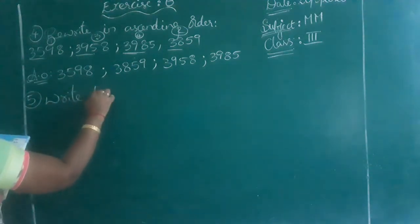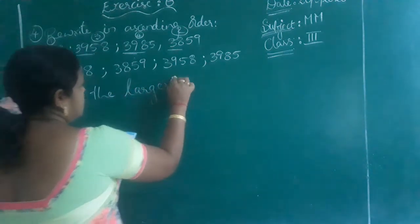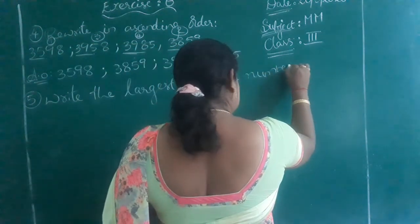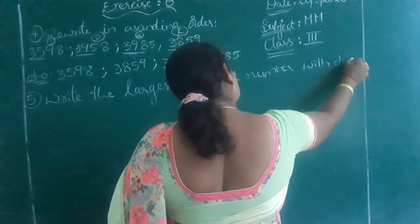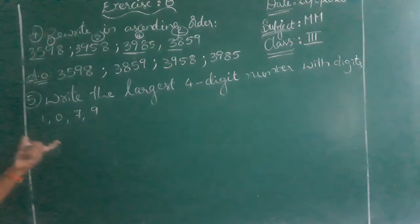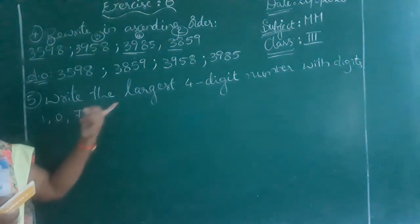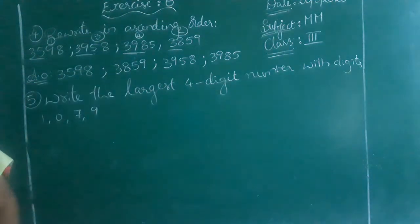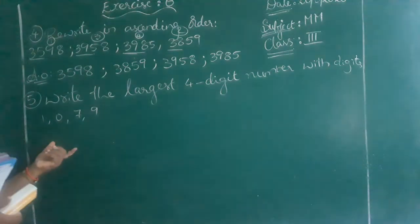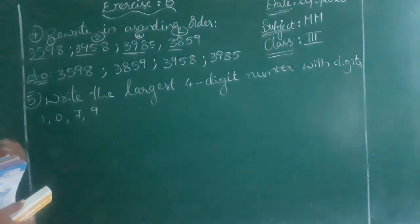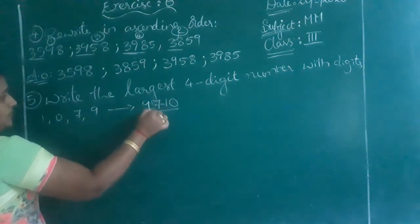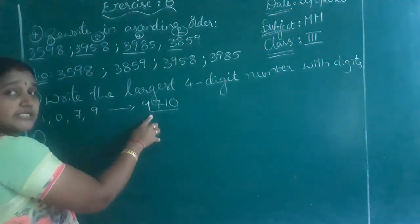Next: write the largest four-digit number with the digits 1, 0, 7, 9. By arranging the given digits in descending order from greatest to smallest — which is greatest? 9, then 7, then 1, then 0. So the greatest number is 9710.